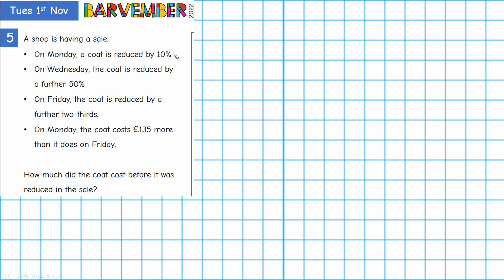On Monday a coat is reduced by 10%, on Wednesday the coat is reduced by a further 50%, and on Friday the coat is reduced by a further two-thirds. On Monday we're told the coat costs £135 more than it does on Friday. And here is the question: how much did the coat cost before it was reduced in the sale?